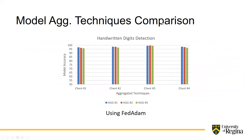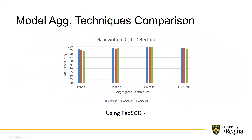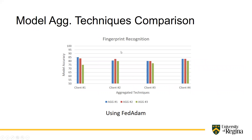In terms of model aggregation technique comparisons on the handwritten digits dataset, the first technique performed well overall, but in some cases technique two outperformed techniques one and three. For fingerprint recognition, model aggregation technique one performed better than the other two.